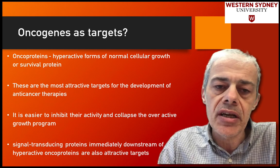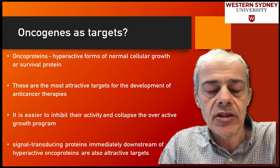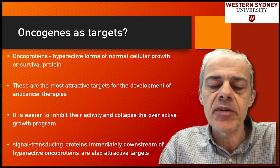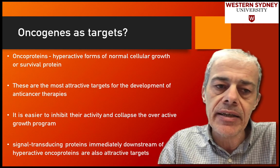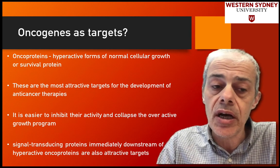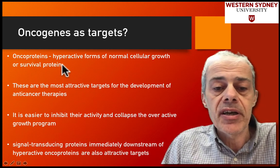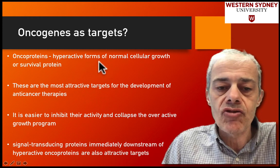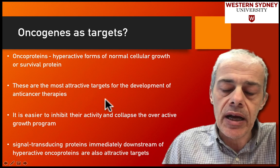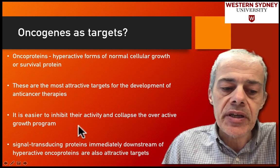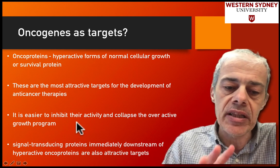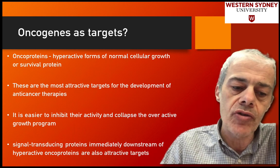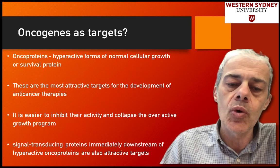Would an oncogene make a good target for rational drug design? These small drugs are going to be knocking out the effect of a protein — inactivating proteins. Oncoproteins become hyperactive and they drive cell growth, so they're attractive targets for drug therapy. If you can inactivate these proteins by binding a small drug in the catalytic site, you're going to knock out that protein, reduce the acceleration, reduce the pressure on growth, and return the cell to more like a normal state.